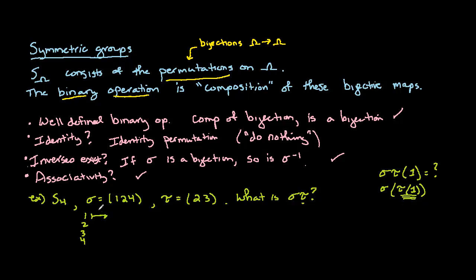So let's look at this. What does tau do? Well, reading this cycle notation, tau doesn't do anything to the element 1. So 1 is fixed. And then we need to analyze, what does sigma do? Well, sigma takes the element 1 and maps it to 2.